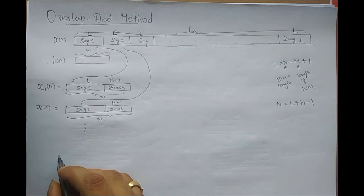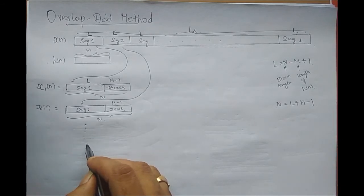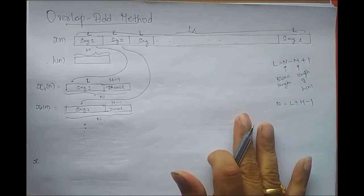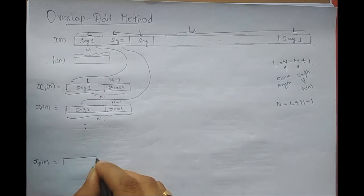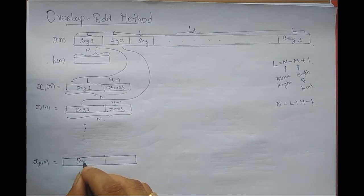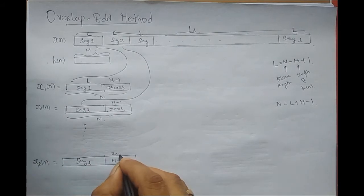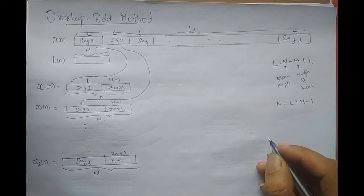I have to keep doing this until all elements in a block are accounted for. The last block, XL(n), contains segment L followed by M minus 1 zeros padded at the end, so that this length is also capital N.